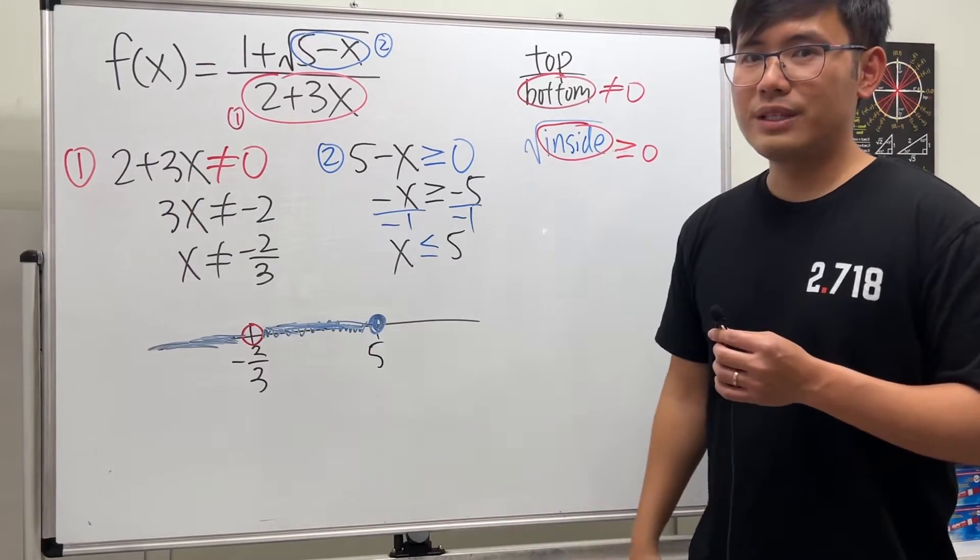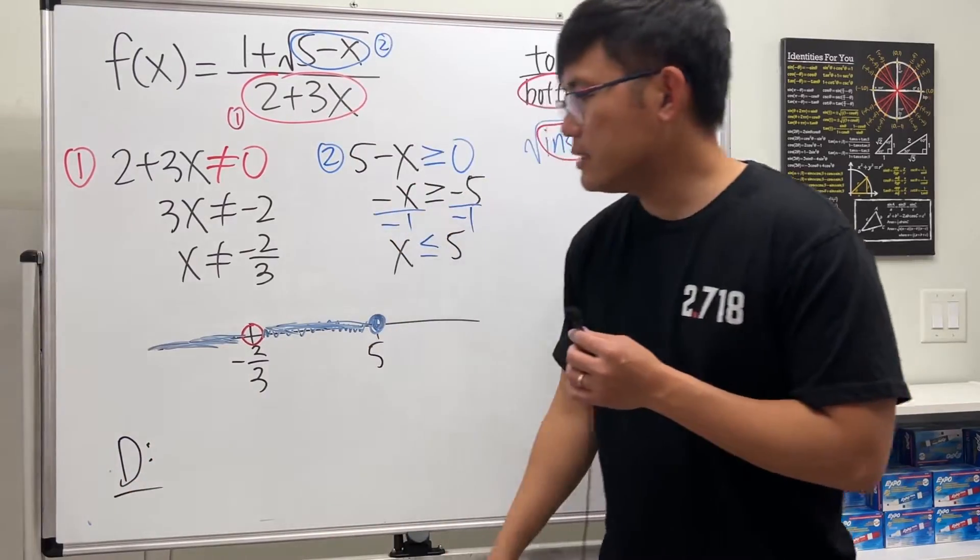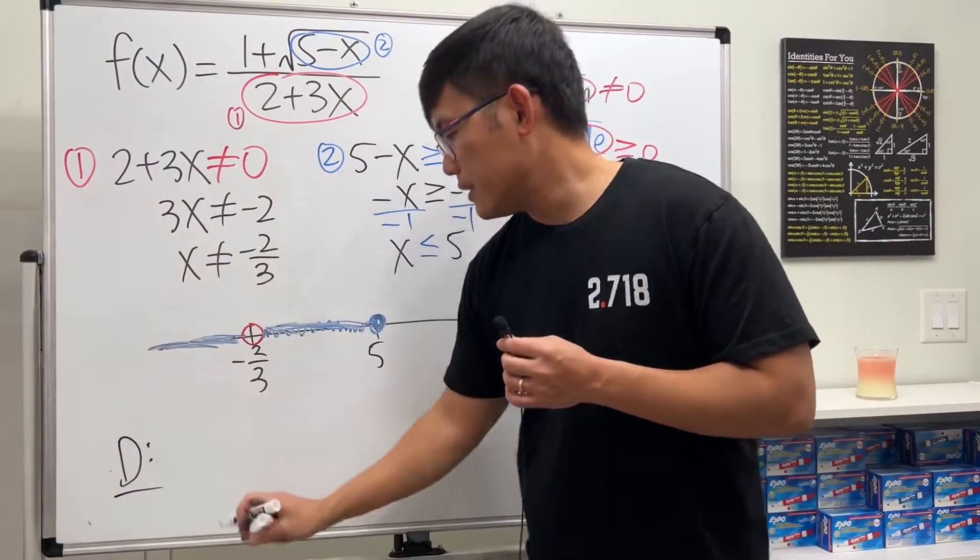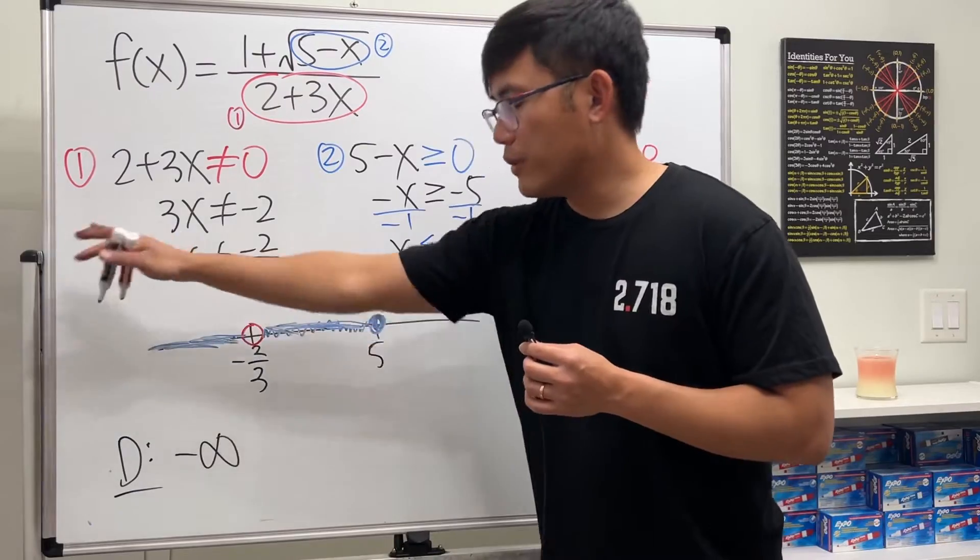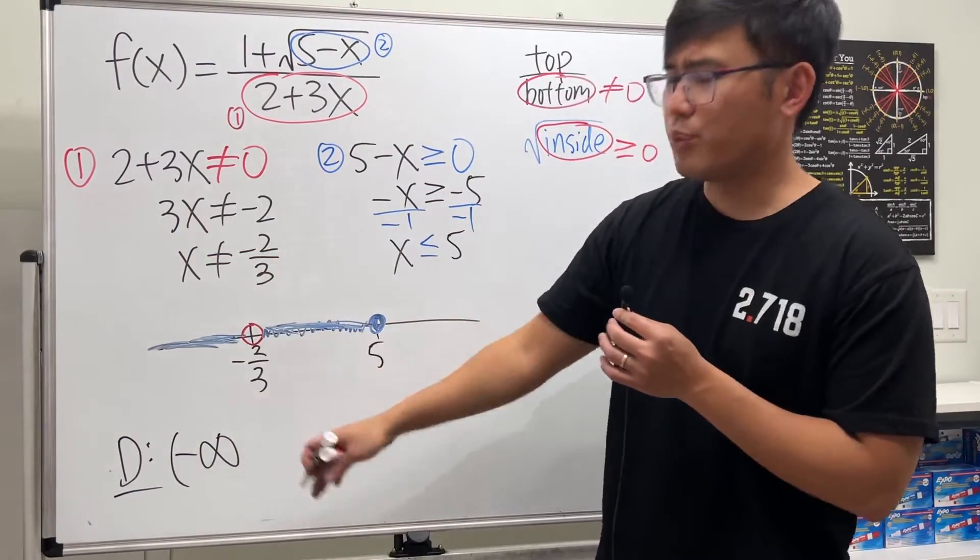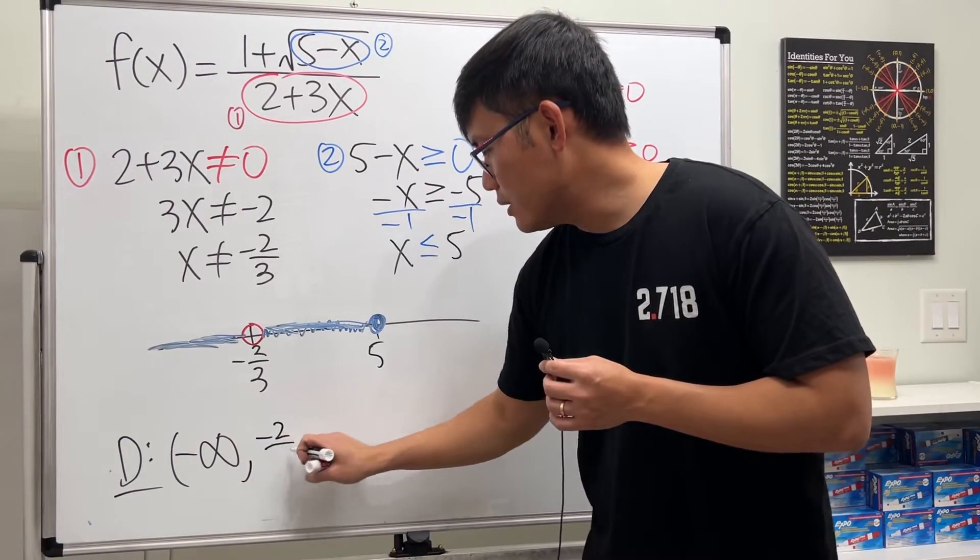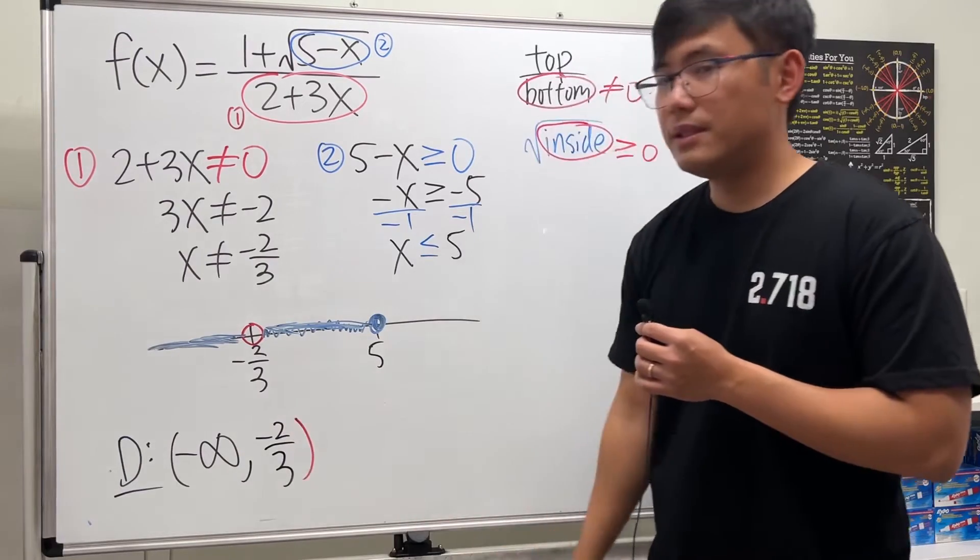Now we write the interval notation. The domain of this function is all the way from negative infinity, and do not include, so we put parentheses, comma negative 2/3. Open circle means we put parentheses.